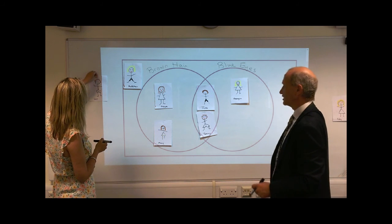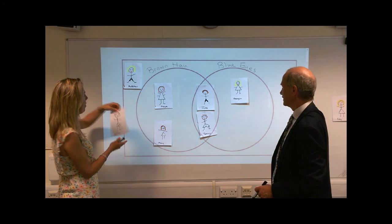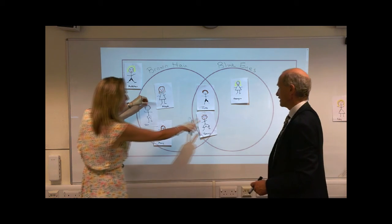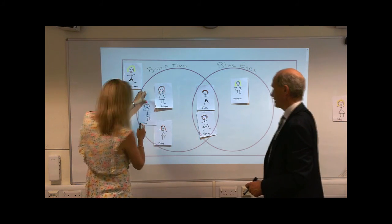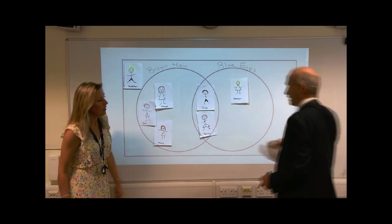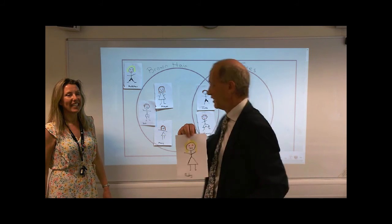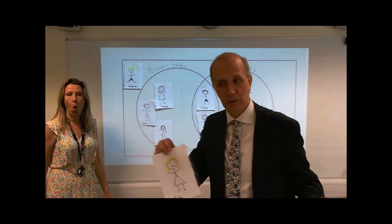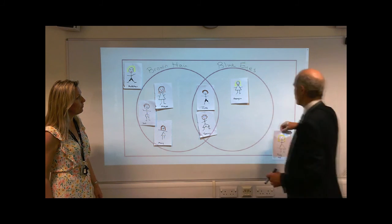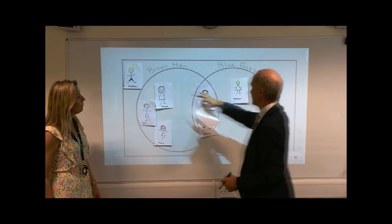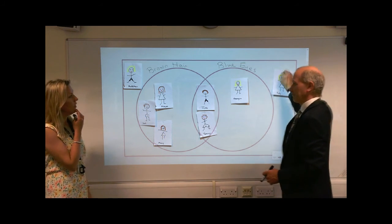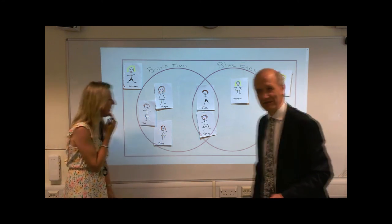I've got Jack here. He's got brown hair and brown eyes. So brown hair goes here — can't put him in the blue eyes circle because he hasn't got blue eyes. And lastly, I've got Ruby. She's a little bit on the evil side — she's got red eyes and blonde hair. She can't go in the brown hair circle and she can't go in the blue eyes circle. She's on the outside. And that's Ruby's life, being on the outside pretty much.